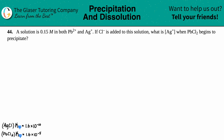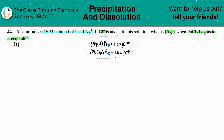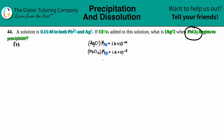Number 44: a solution is 0.15 molarity in both Pb²⁺ and Ag⁺. If Cl⁻ is added to this solution, what is the concentration of Ag⁺ when PbCl₂ begins to precipitate? We're talking about precipitation, which means things are going to start turning into a solid — that has to do with solubility products, Ksp. The first thing we need to do is go to the back of the book to find the two Ksp values. They gave us one: the Ksp for PbCl₂ is 1.6×10⁻⁵.